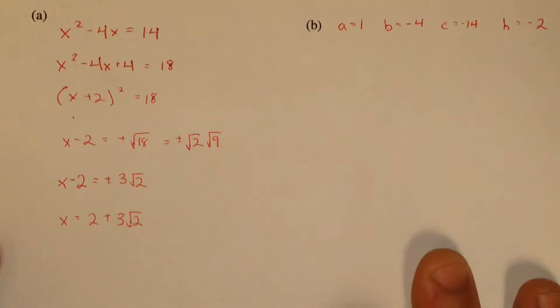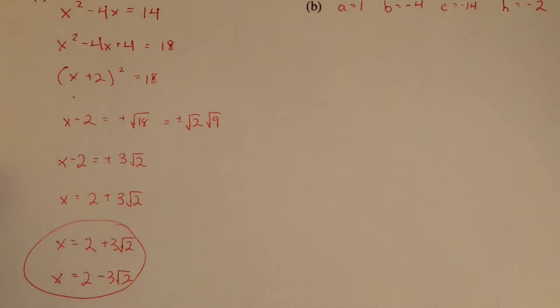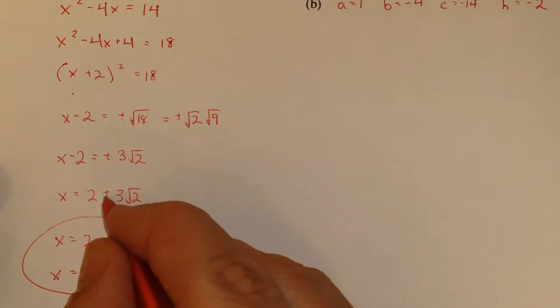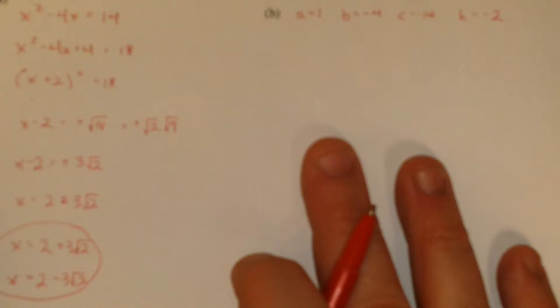So we're getting two solutions. We're getting x is 2 plus 3 root 2, and x is 2 minus 3 root 2. I like writing them as separate solutions, but you can use this plus-minus thing. So hopefully we get the same thing if we do it by the quadratic formula.